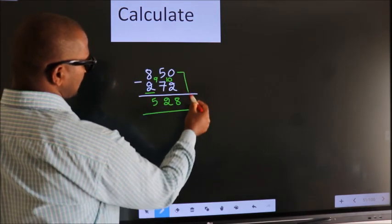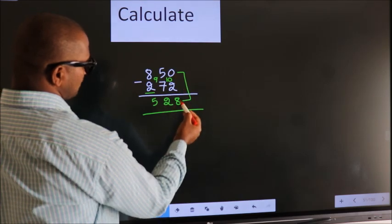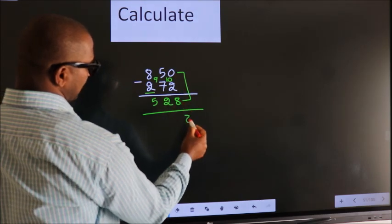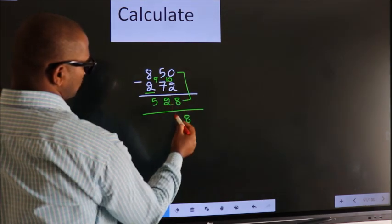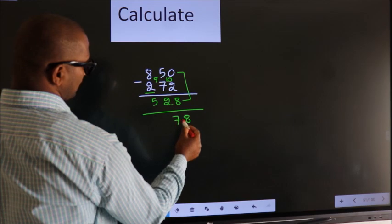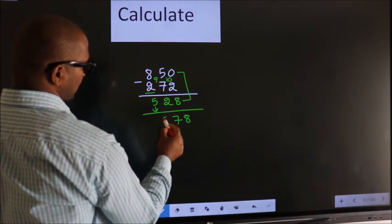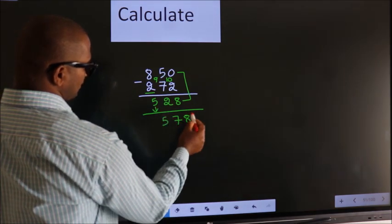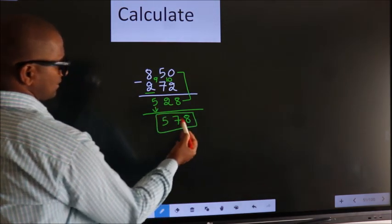Now add these two. 0 plus 8 is 8. 5 plus 2 is 7. First digit as it is, you write. So this is our answer.